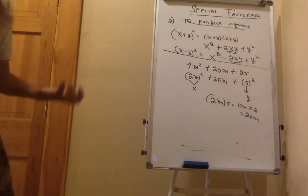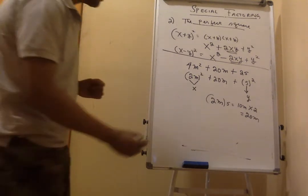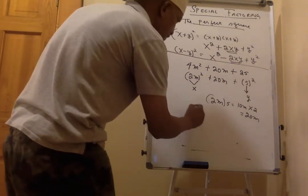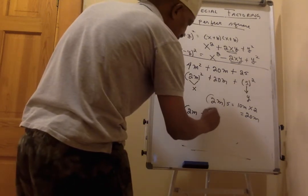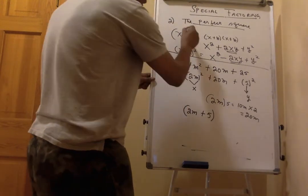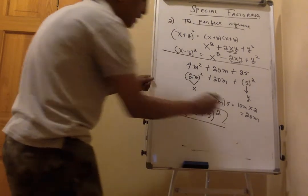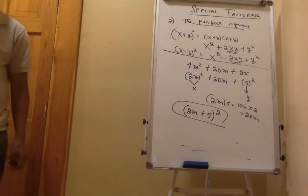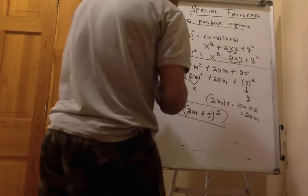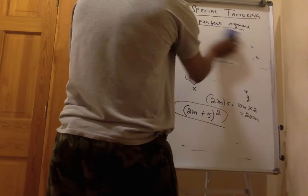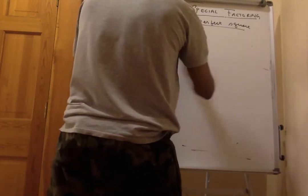Since we've verified this is a perfect square, we don't need to use the product-and-sum method. With x = 2m and y = 5, we write the result as (2m + 5) squared. This saves time compared to finding the two numbers by product and sum. Let's do another one.